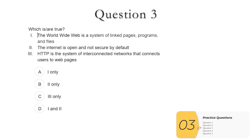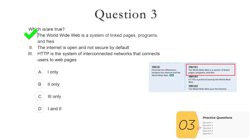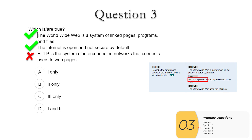Question three: which of these are true? One: 'the World Wide Web is a system' — you've seen this already, it's in the frameworks, this is true. Two: 'the internet is open and not secure by default' — this is also true. Remember the internet simulator — you could read anybody's messages. SSL, TLS, and HTTPS are all things you need to make the internet secure. Three: 'HTTP is a system of interconnected networks that connects users to web pages' — no, that is the internet. HTTP is the protocol. So one and two are true, and the answer is D.